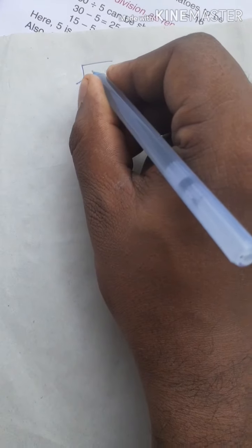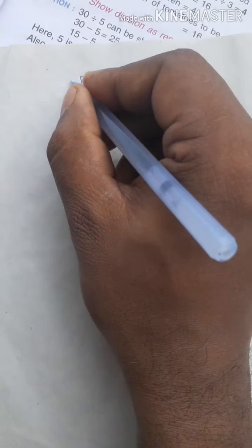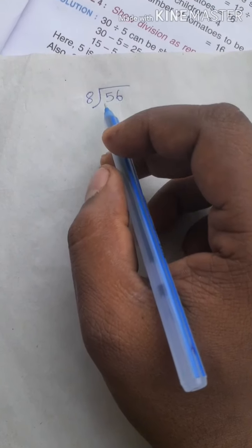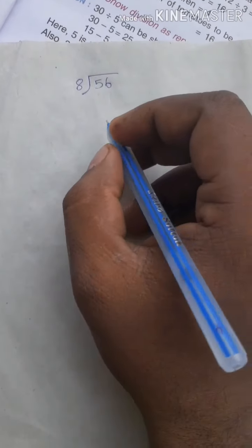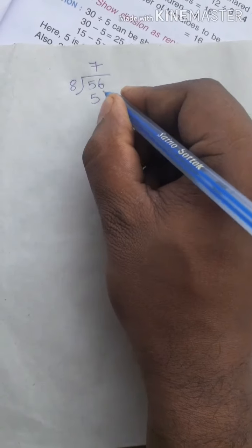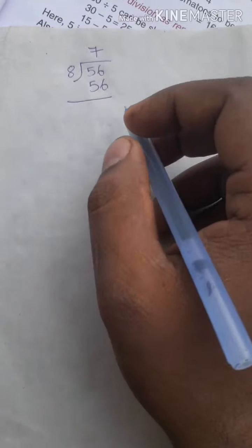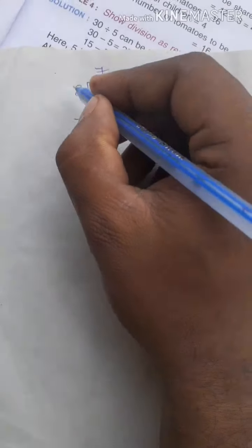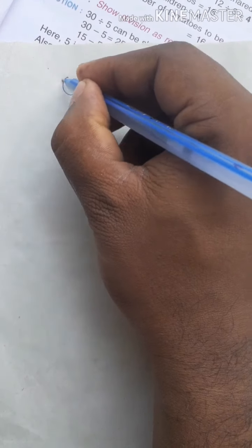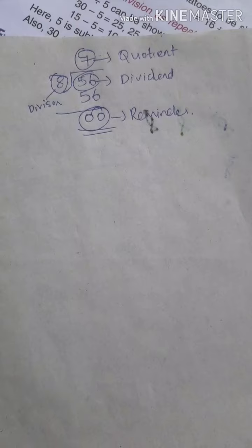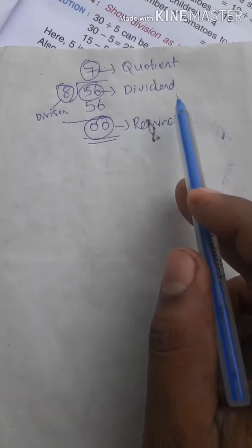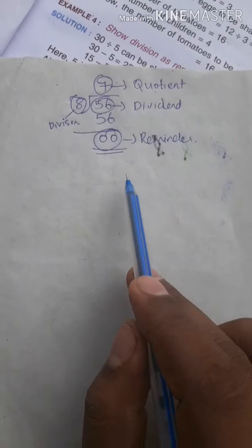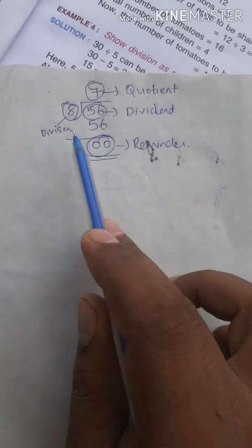In terms of division you write like this. The sign is like this and write 56 inside and 8 outside. We already see 8 goes 7 times in 56 to get 0. Understood?